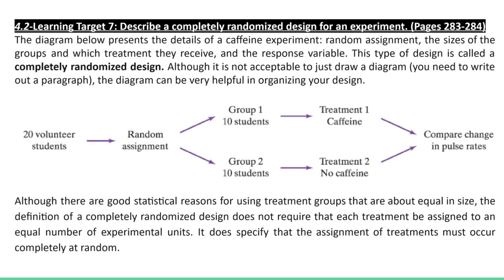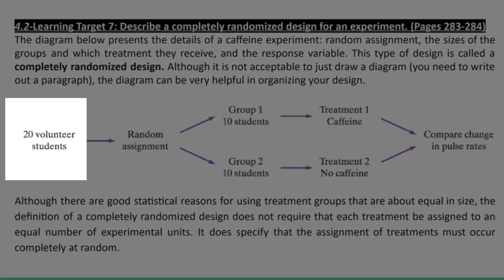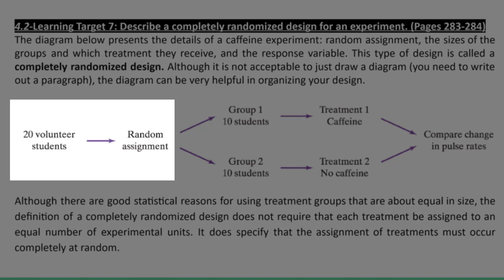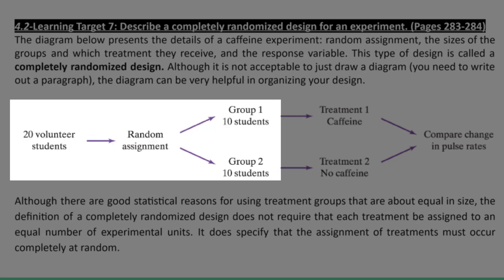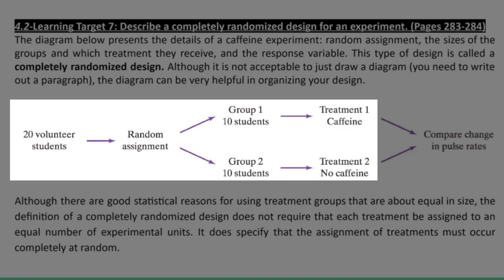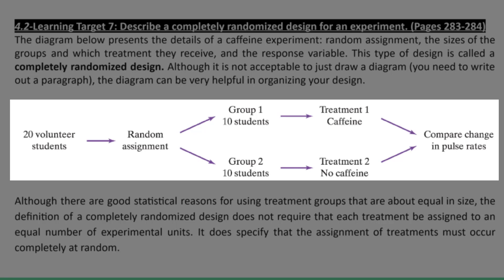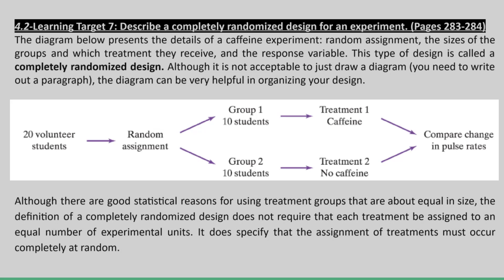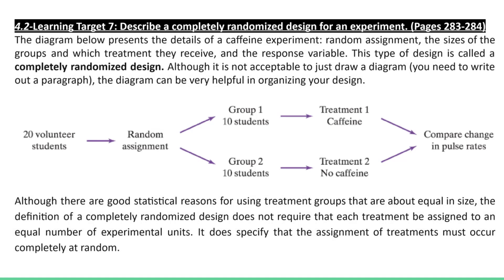To describe a completely randomized design, let's first do a little outline. The diagram below describes a completely randomized design with 20 student volunteers. We see the random assignment step and the grouping — groups one and two, ten students each. In this experiment they're looking at a caffeine or no caffeine treatment, and then at the end we compare results. This is a great way to organize, especially when we get into more complicated experimental design strategies like we'll see later today.